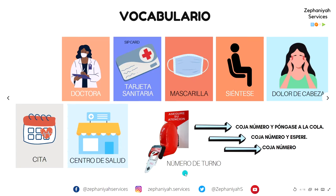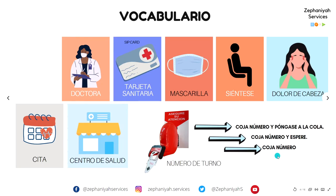When you go to the health center, most likely you're going to see a machine which will give you a number, and that number lets you know when your turn is. The person at the door can tell you instructions such as: take a number and get in the queue, take a number and wait, or simply take a number. Por ejemplo: coja número y póngase a la cola, coja número y espere, coja número y siéntese.